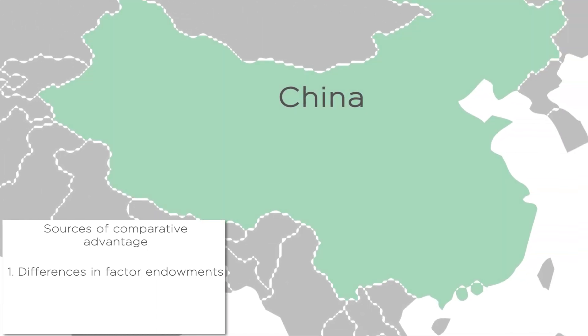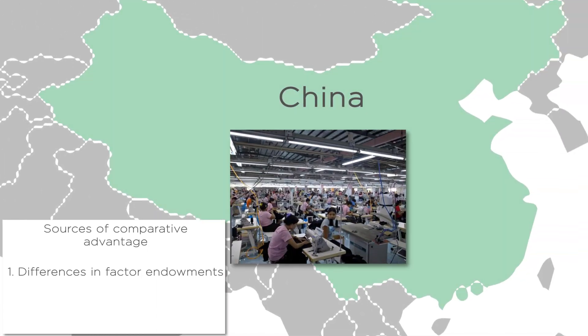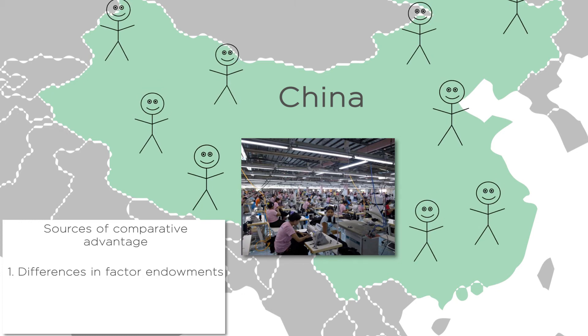Differences in factor endowments also explain why most clothing now comes from China. The main input for clothing production is labor to sew the clothes, and China has lots of labor.